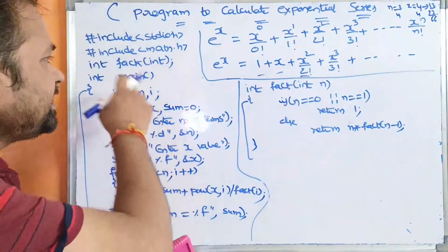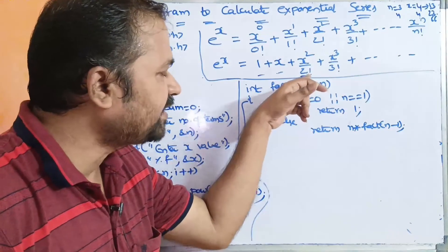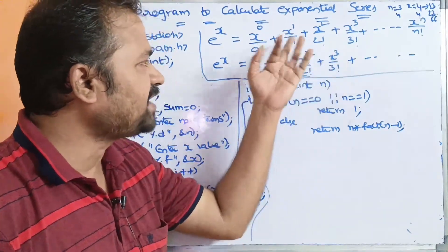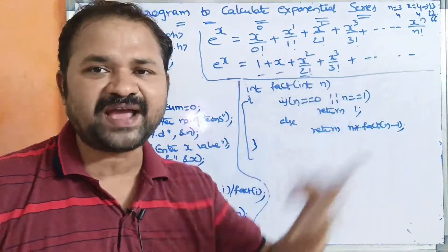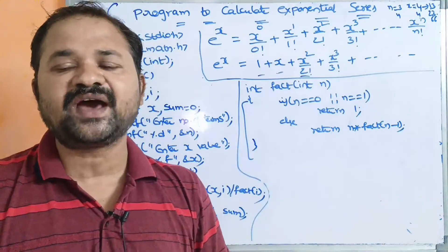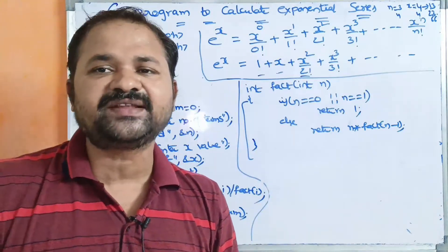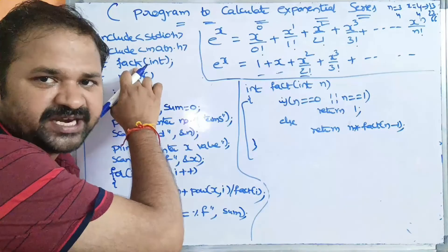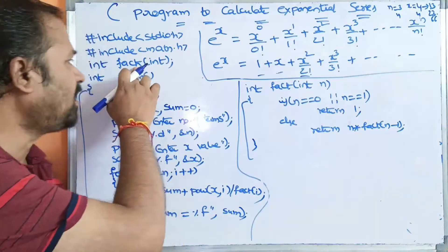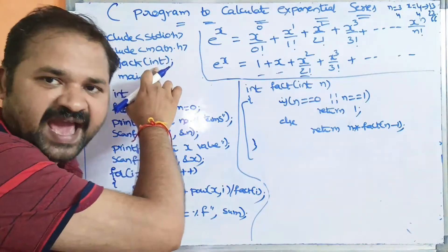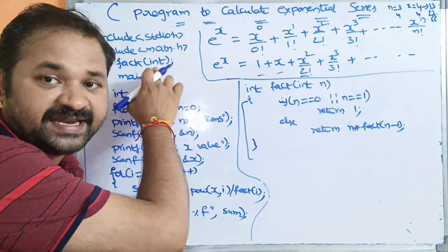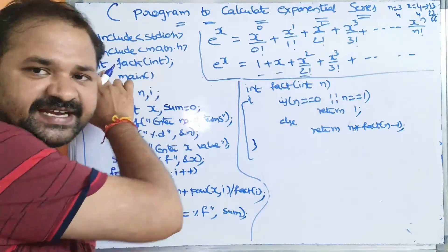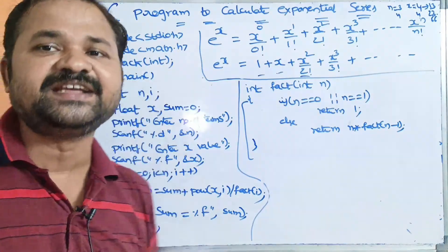Next, here we have to calculate factorial of 1, 2, 3, 4, and so on. Since factorial is not available in the math header file, in order to calculate the factorial we are using a user-defined function called fact.